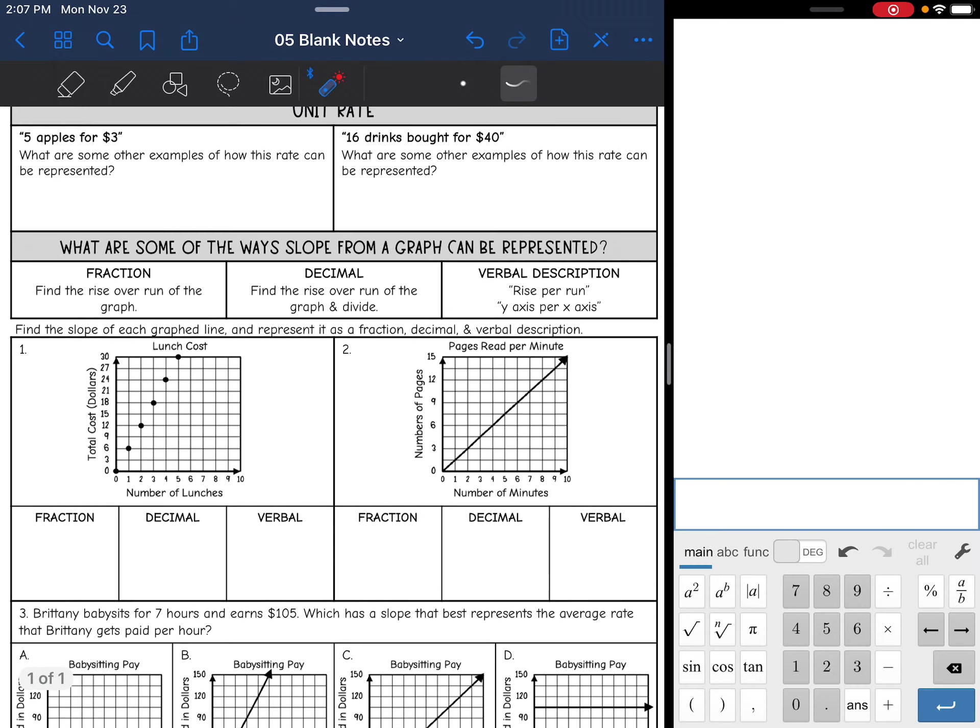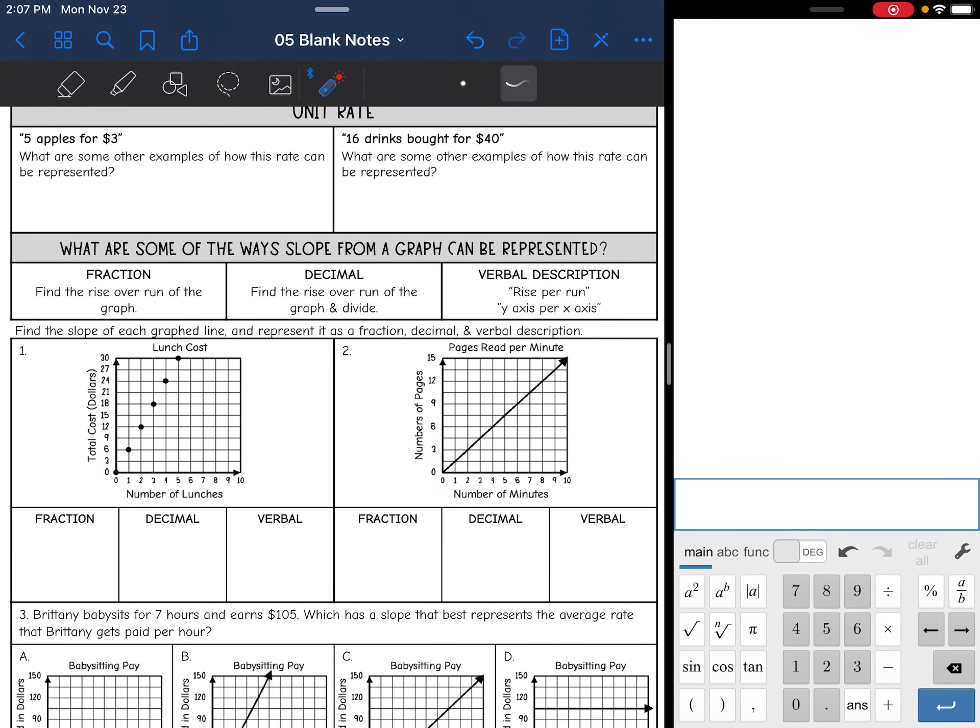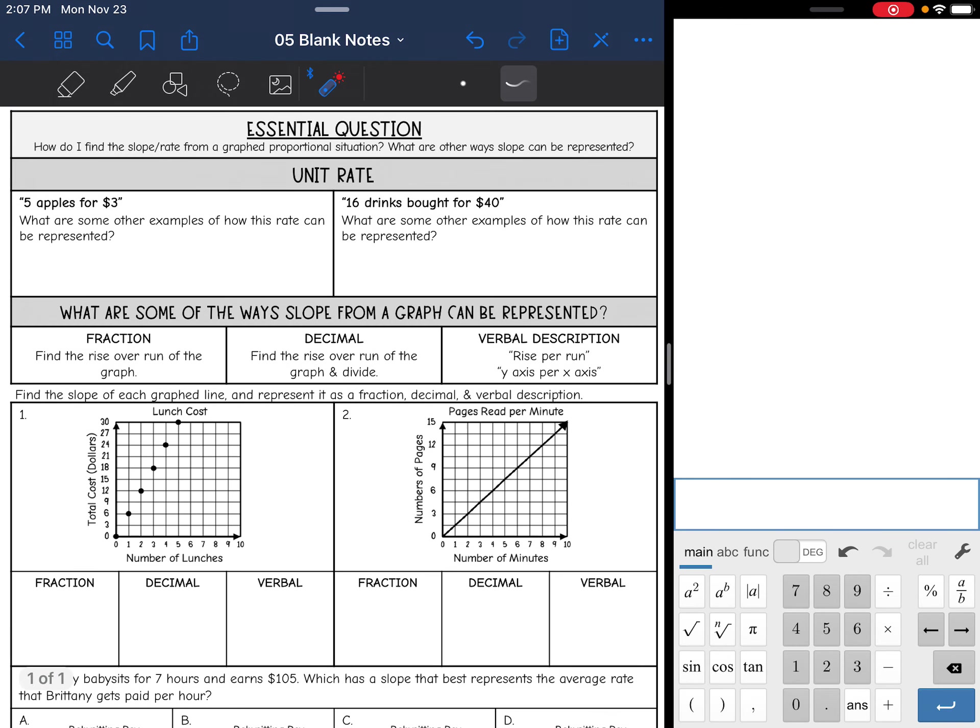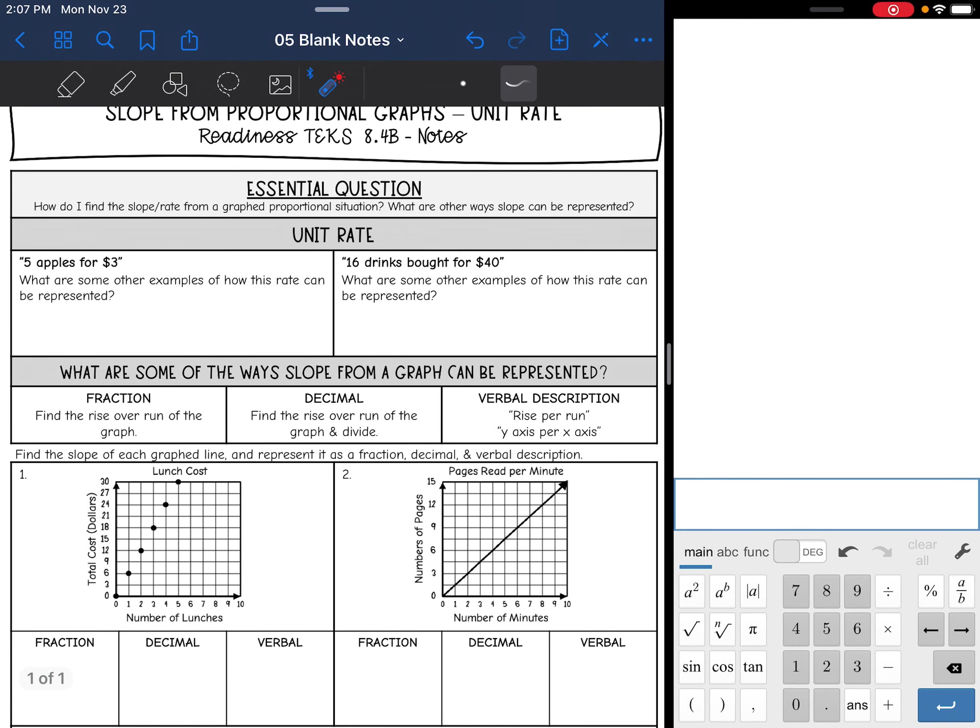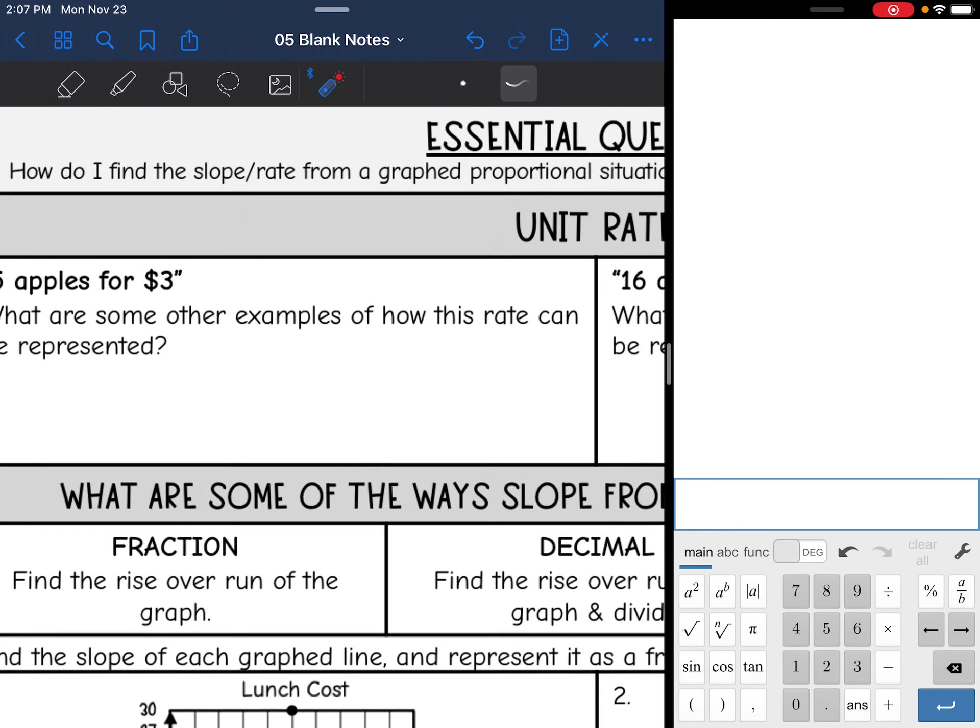Proportional graphs are where we go through the origin. We will look at proportional relationships more at the end of this unit. For today, all you need to know is that they create a special type of slope. We're going to look at how to find slope from those situations, and then we're going to look at other ways that slope can be represented. Let's first review unit rate and a few different ways that we can represent unit rate.